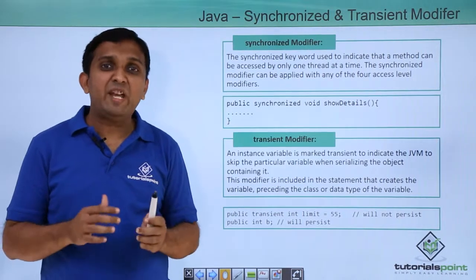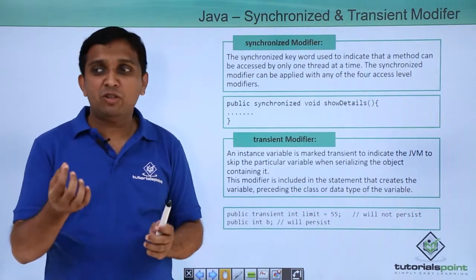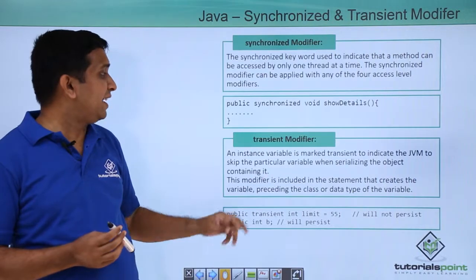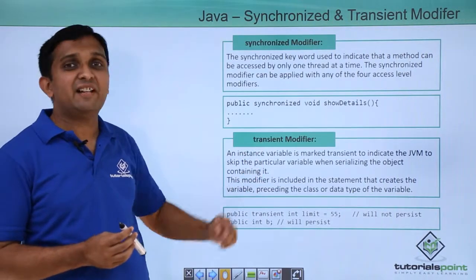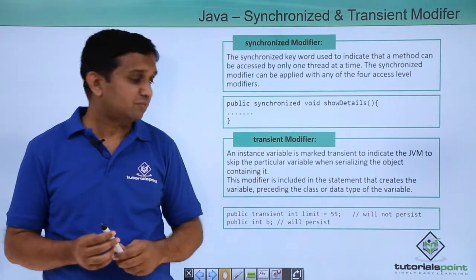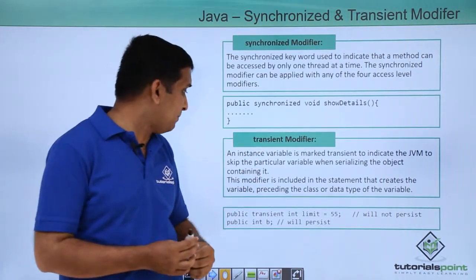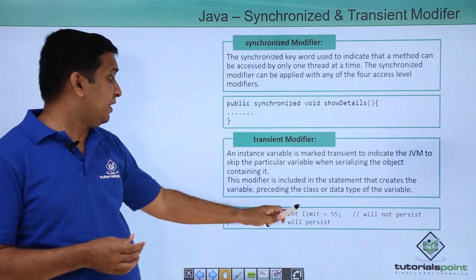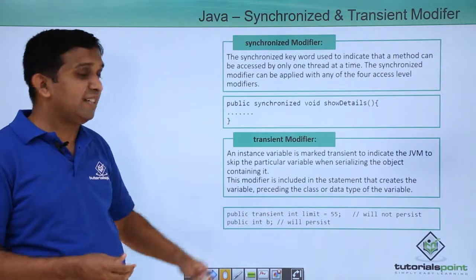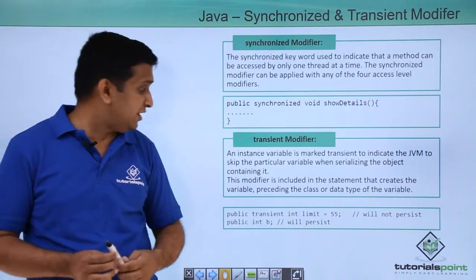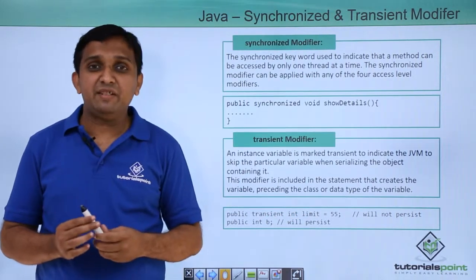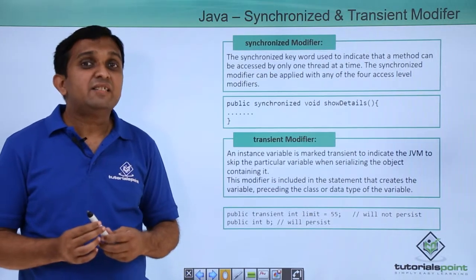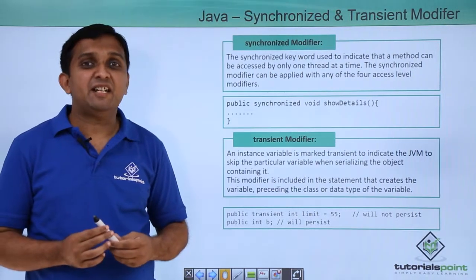If I want to exclude a particular attribute, then that attribute I have to declare as transient. Here the example is given: the limit is an integer which is declared transient, and if it is declared transient, then it would not get serialized.